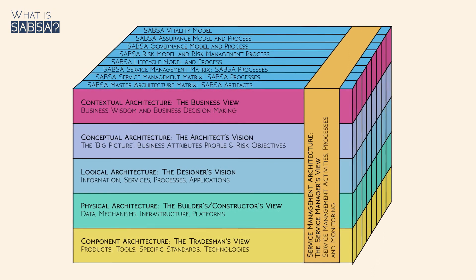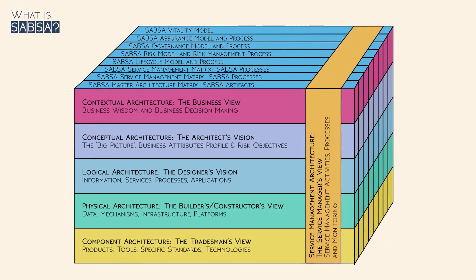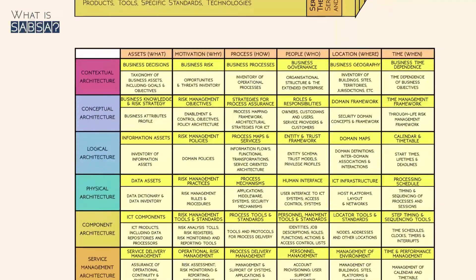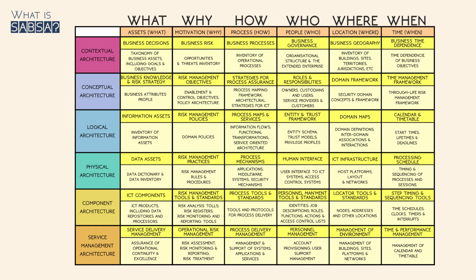Each of the layers of the architecture model is also supported by a vertical analysis based on six key questions: what, why, how, who, where and when. This is represented in the SABSA master matrix.